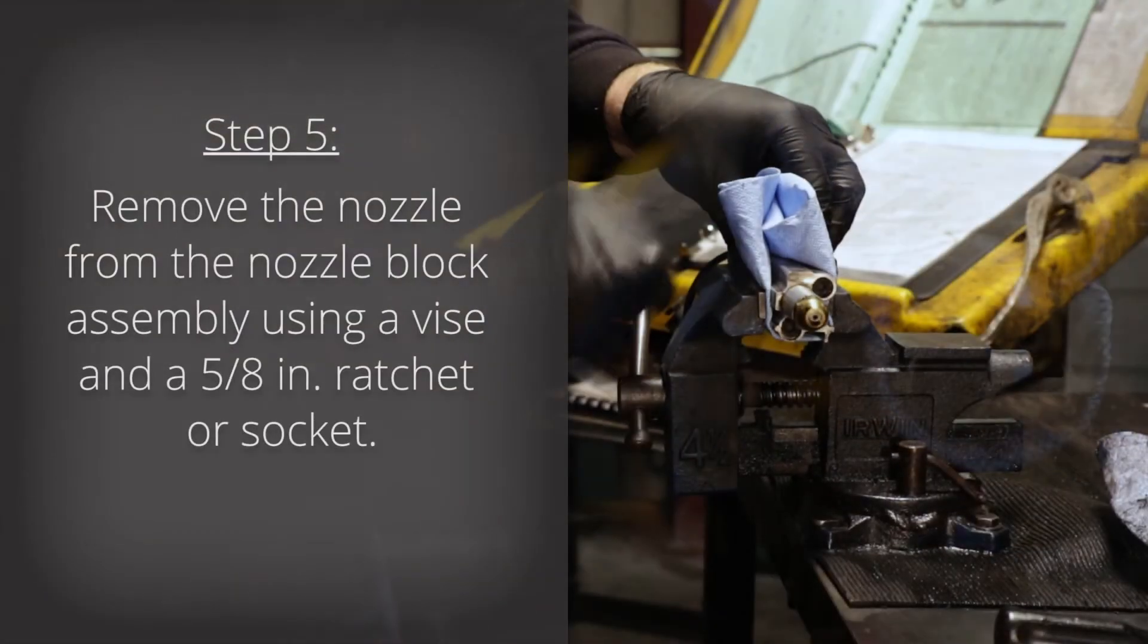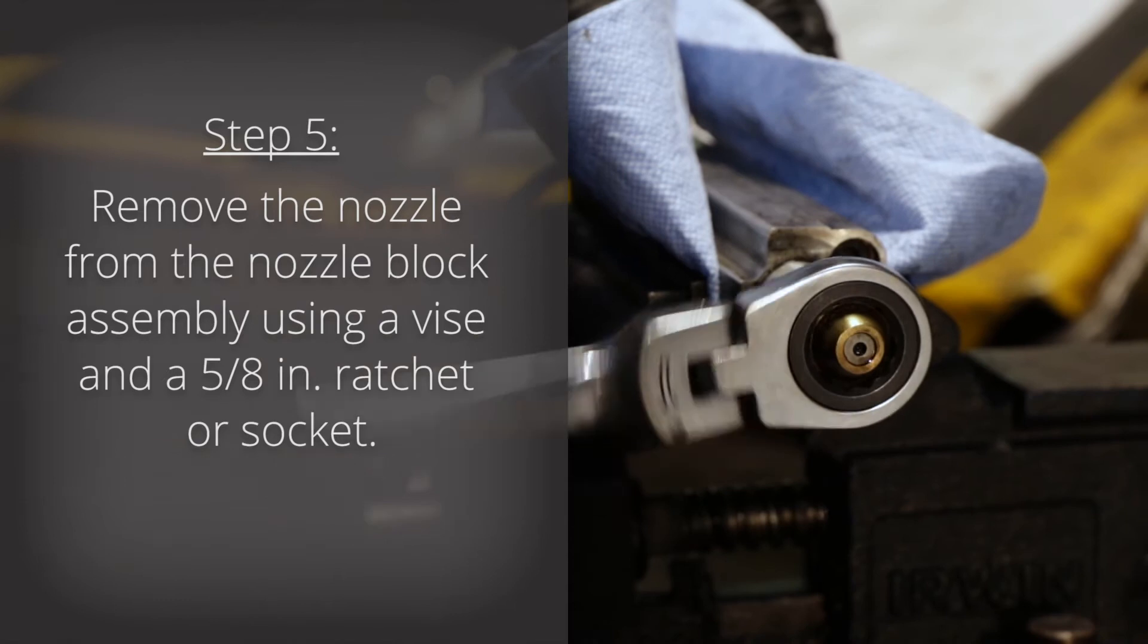Step 5. Remove the nozzle from the nozzle block assembly using a vise and a 5-8 inch ratchet or socket.